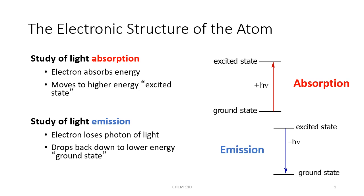We are able to study the electronic structure of atoms by looking at how different molecules and atoms interact with electromagnetic radiation, or in other words, how they interact with light.